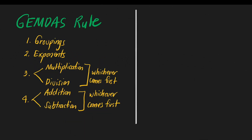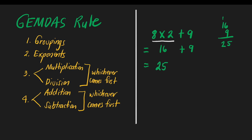Let's have examples. Let's say 8 times 2 plus 9. Which do we do first? Based on the GEMDAS rule: do we have groupings? None. Do we have exponents? None. Do we have multiplication or division? Yes, we have 8 times 2, so we do this one first. 8 times 2 is 16, then copy 9. Next, 16 plus 9: 9 plus 6 is 15, 1 plus 1 is 2. The answer is 25.